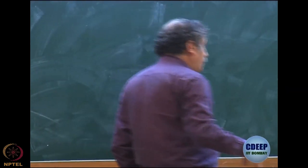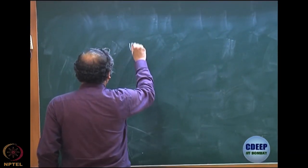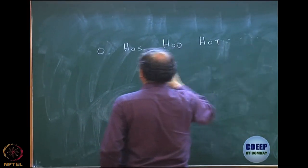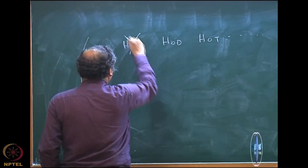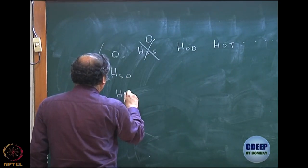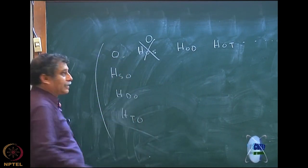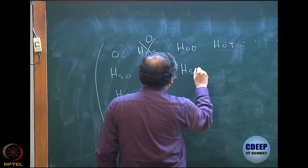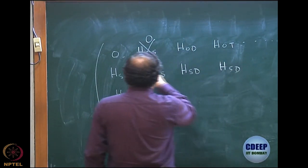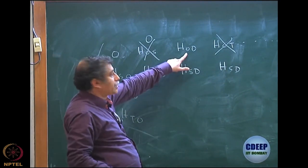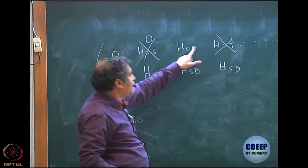Looking at the CI matrix structure for correlation energy: the first element is always zero, then we have H₀ₛ, H₀d, H₀t and so on in full CI. The H₀s block is zero because of Brillouin's theorem — that is an additional simplification. Similarly in the column we have singles with Hartree-Fock, doubles with Hartree-Fock, and so on. In the first row, everything is zero except the Hartree-Fock with doubles term.